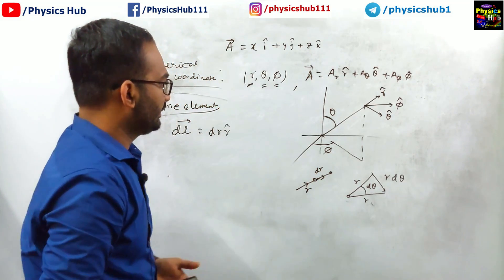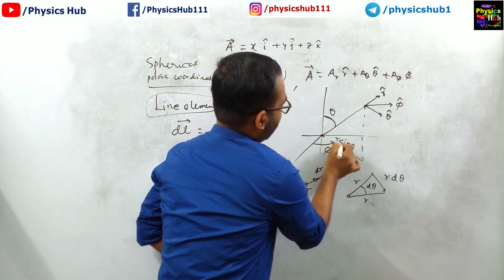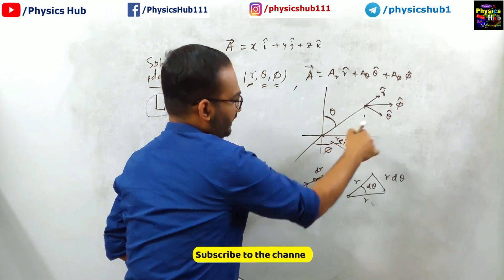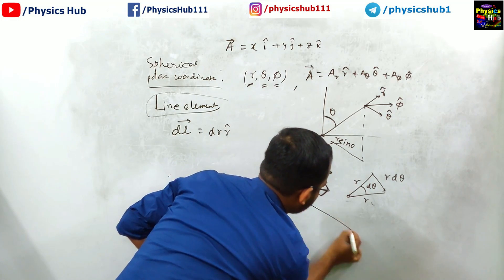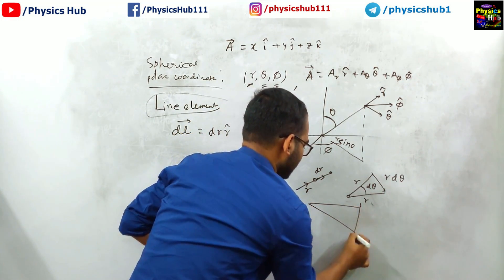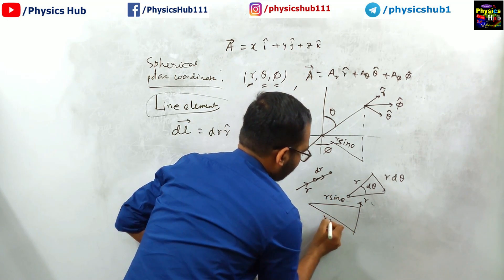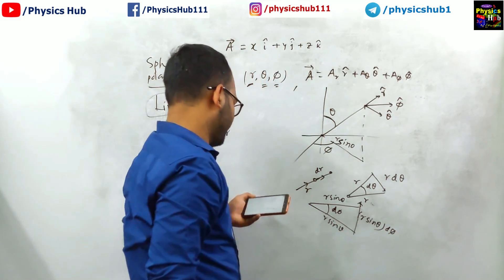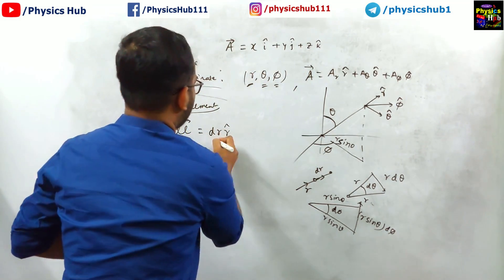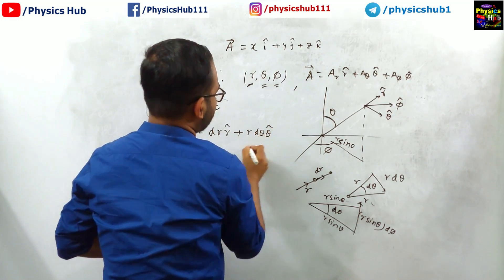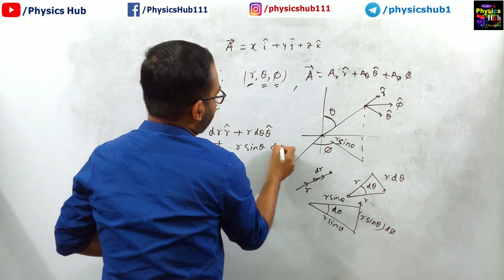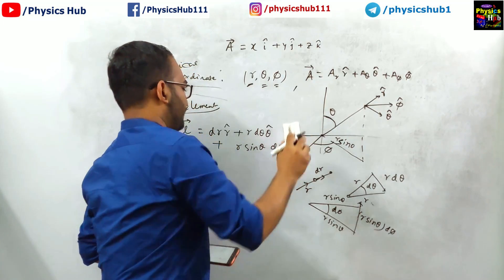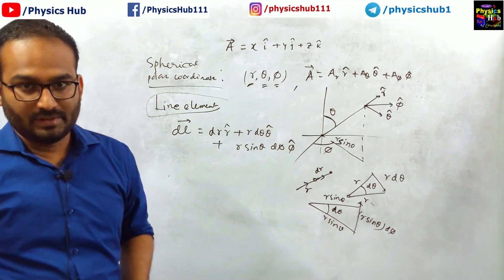What about phi? R sin theta is fixed and phi is changing by d-phi. So the corresponding change along phi-cap is R sin theta d-phi. That is why we write the full line element as: DL equals dR R-cap plus R d-theta theta-cap plus R sin theta d-phi phi-cap.